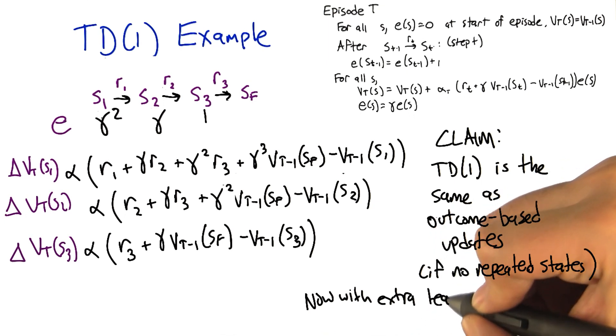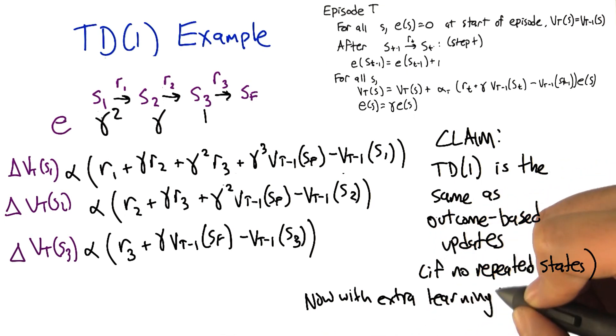Then what would have happened is I would have seen the rewards R1, R2, R3, and then some other reward—let's call it R1 prime or something.